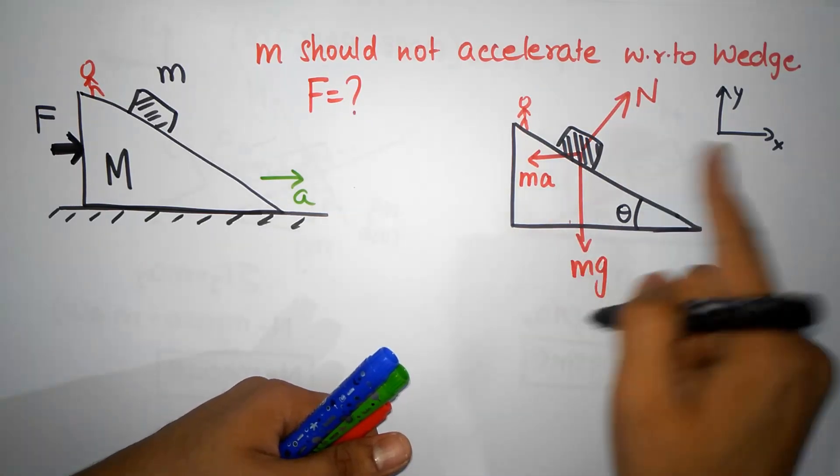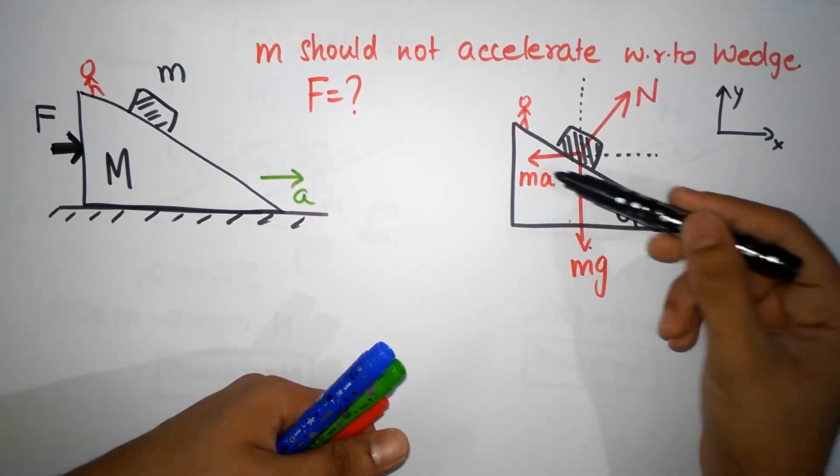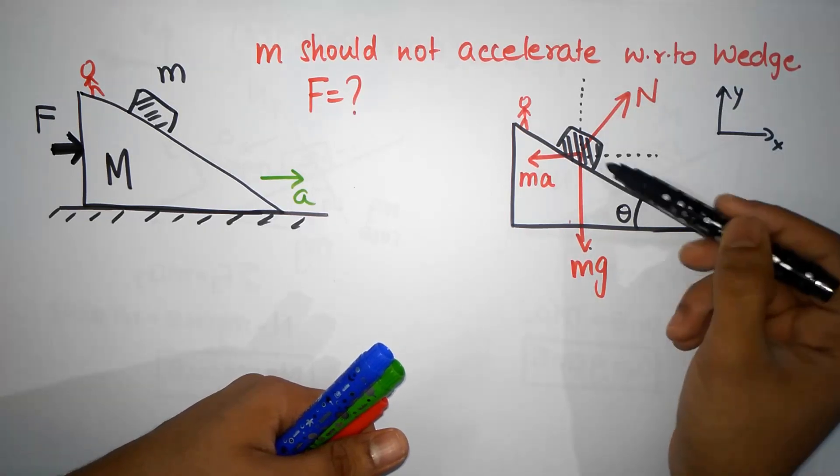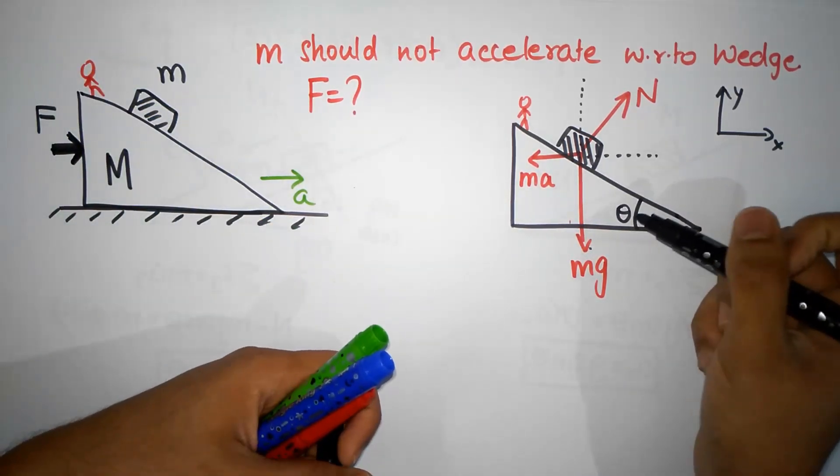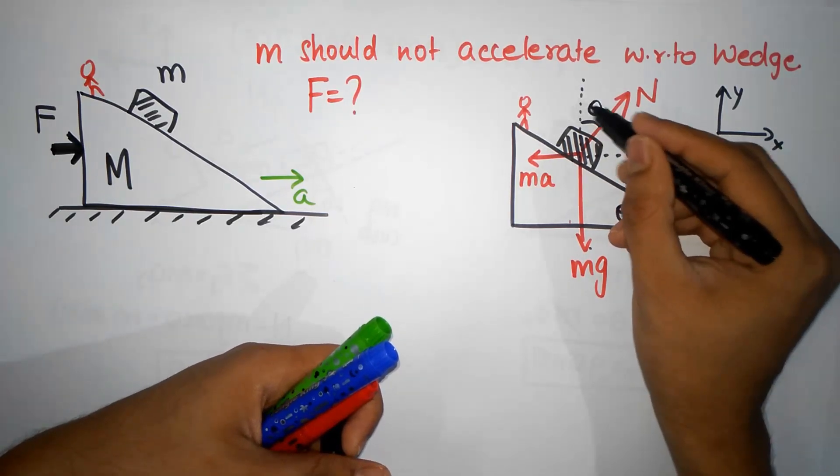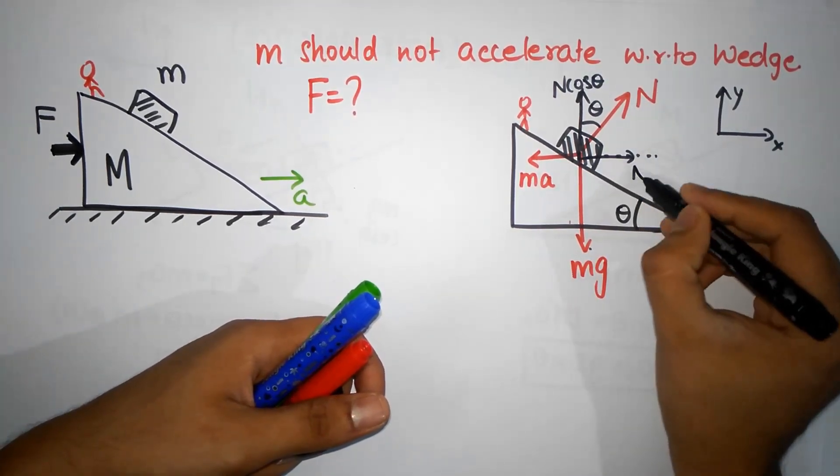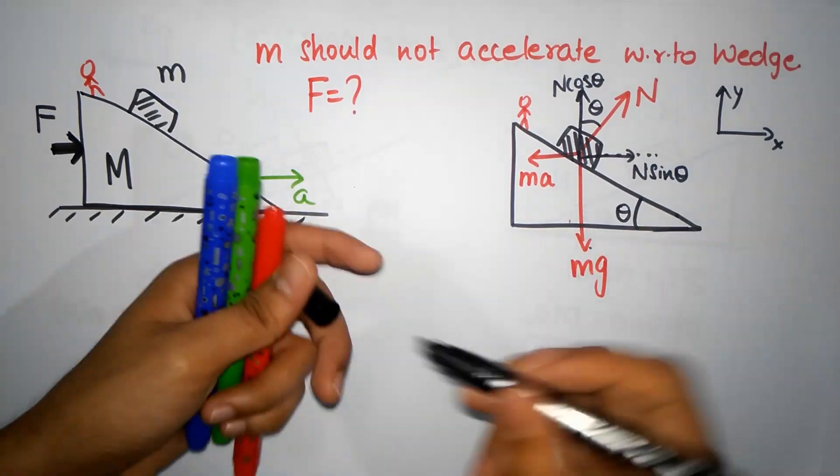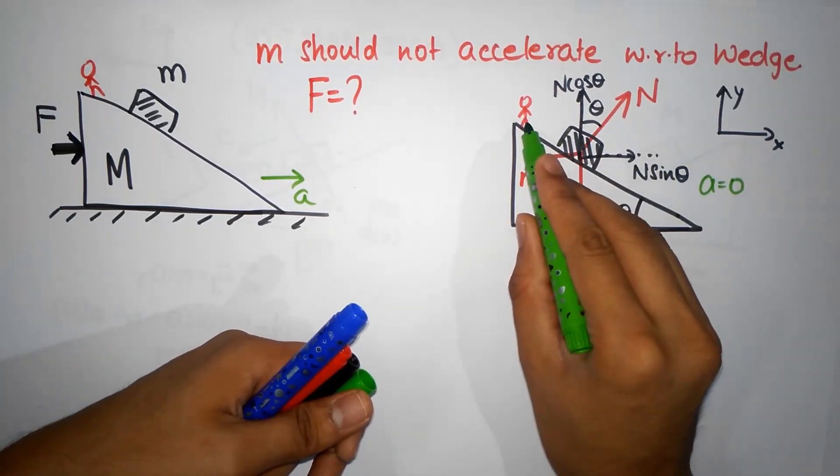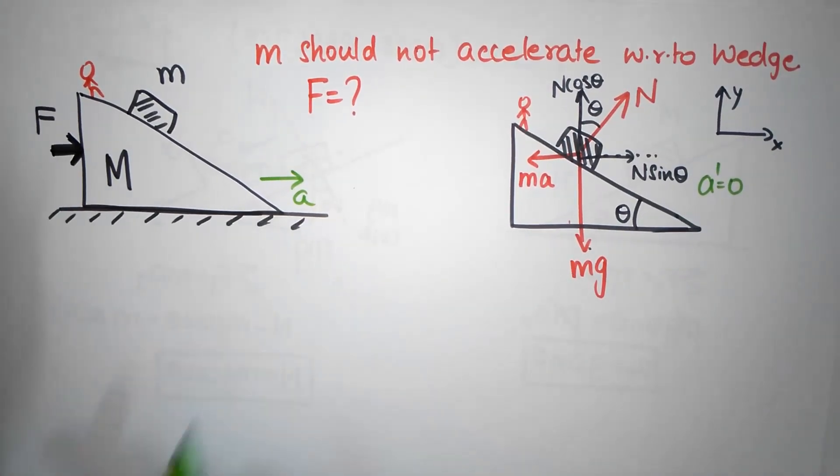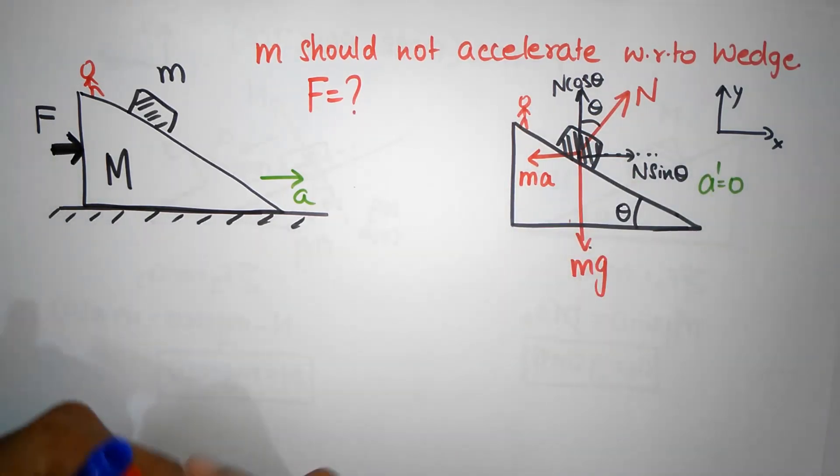This angle is theta, so we have N cos theta this way and N sin theta this way. Since there shouldn't be any acceleration with respect to the wedge, acceleration as seen from this reference frame should be zero. I'll call that a dash - the acceleration of this block must be zero, so this thing is in equilibrium.